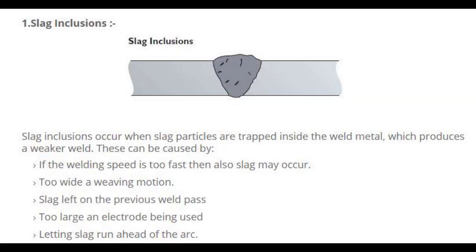Number 1: Slag inclusions. Slag inclusions occur when slag particles are trapped inside the weld metal, which produces a weaker weld. These can be caused by: welding speed too fast, too wide a weaving motion, slag left on the previous weld pass, too large an electrode being used, and letting slag run ahead of the arc.